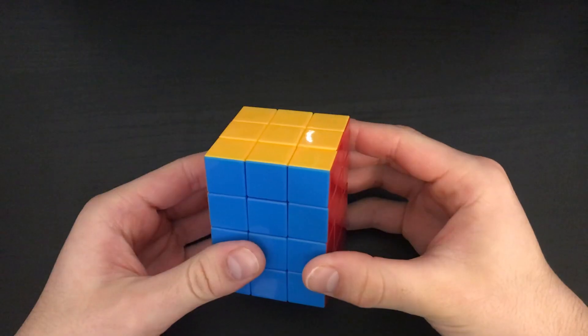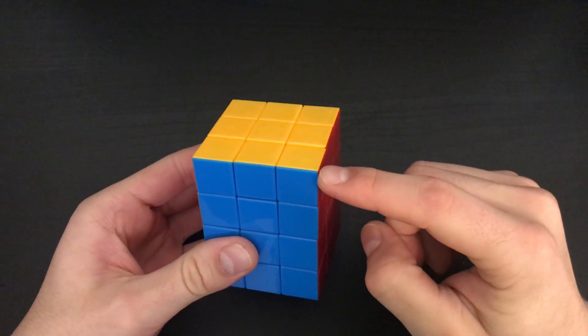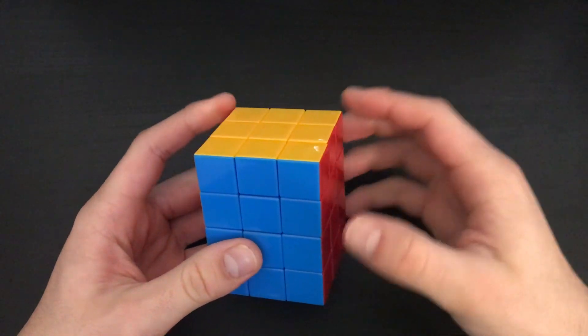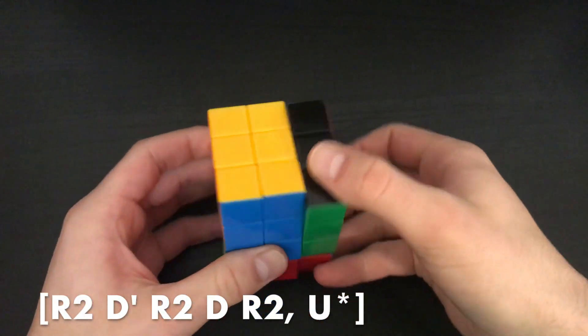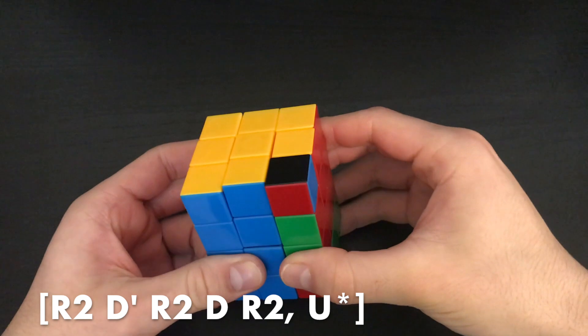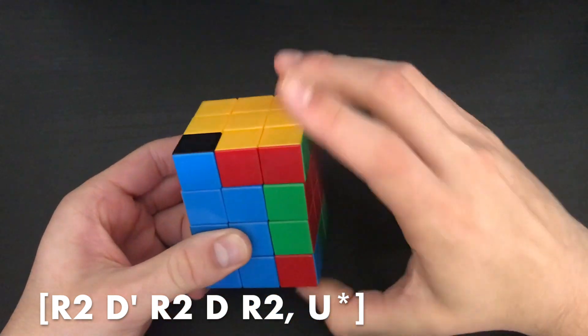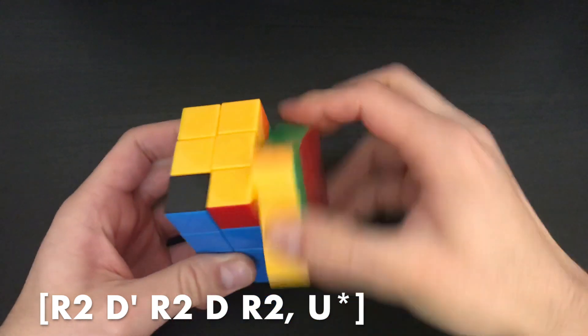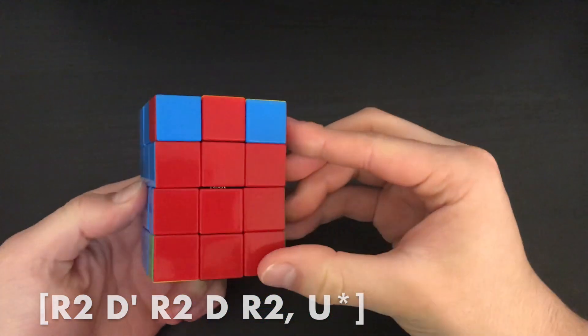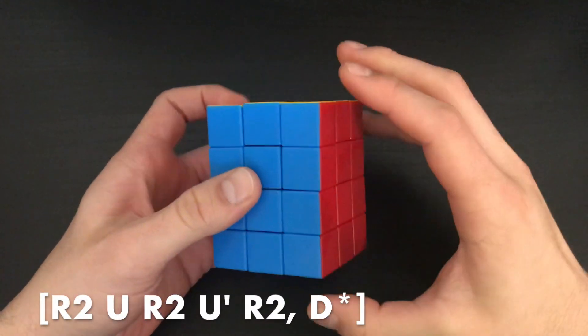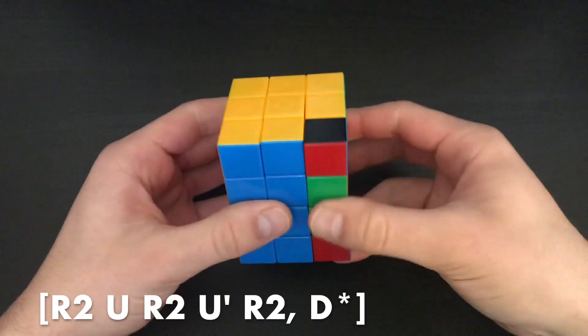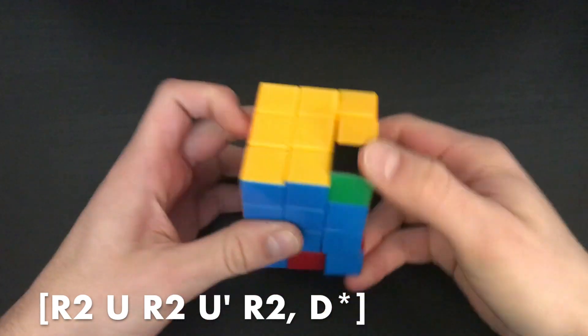Let's start with corners. To 3-cycle corners, using UFR as the buffer, we can do the insertion R2D' R2D R2, then interchange as U, then reverse the insertion and reverse the interchange. You can also swap the U and D moves if you have two pieces in the bottom layer, like this.